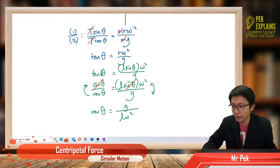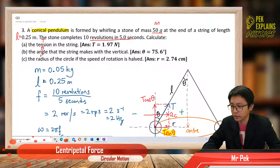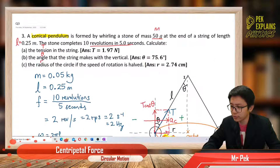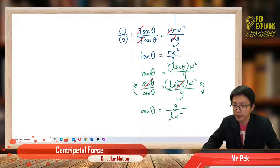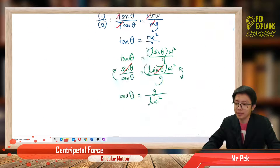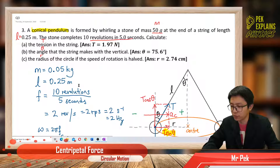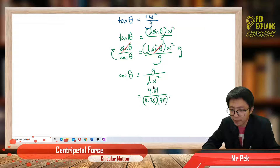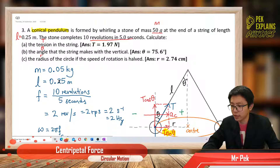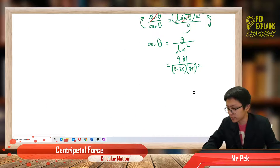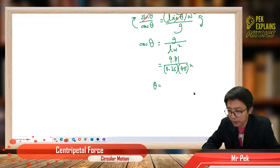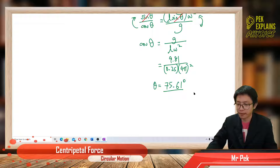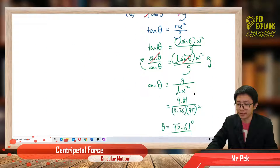Now we have all the values: L = 0.25 m, g = 9.81, and omega = 4π. So cos θ = 9.81 divided by 0.25 times (4π)². Calculating this, we get theta equals 75.61 degrees. That's our answer for Part B — the angle the string makes with the vertical.